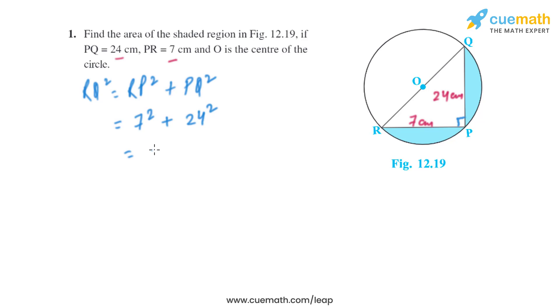On adding them, we'll get 625. So from here we will get the length of RQ, that is square root of 625, which is the same as 25 centimeters.